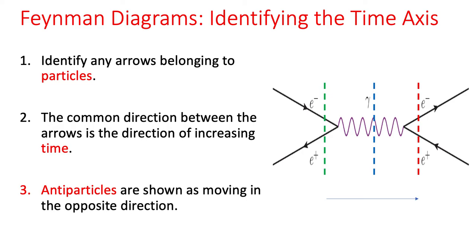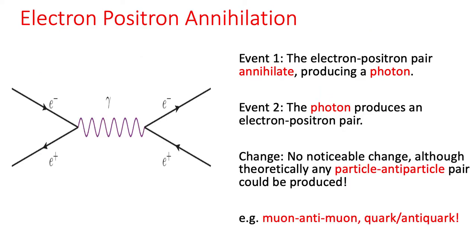On the right-hand side you would notice that my anti-electron and my electron would be moving apart from each other. So what we're seeing here is something very deep and difficult. This is actually the Feynman diagram for electron-positron annihilation.